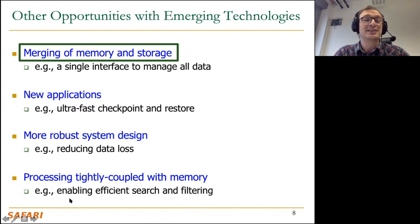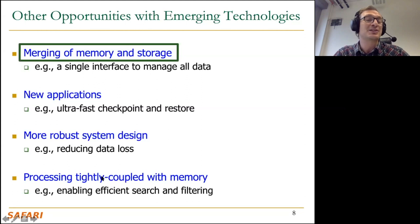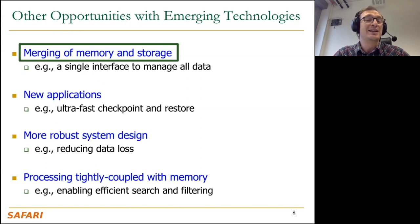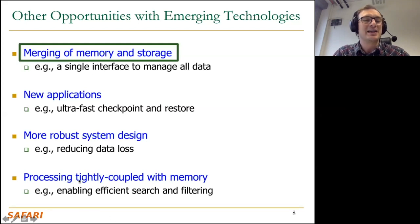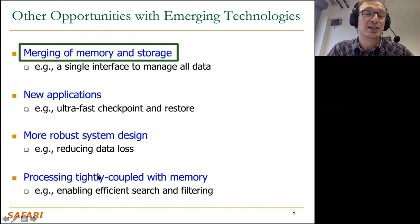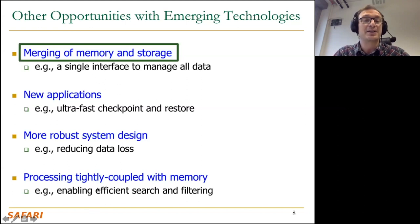Resistive memory technologies enable various types of processing tightly coupled with memory — processing using memory, or computation in memory. They enable ambit-like approaches just like we did with DRAM with ambit and row clone. They enable even more row activations concurrently, leading to other functions. Also, the crossbar structure in resistive memory technologies enables matrix-vector multiplication using Kirchhoff's laws, which has fascinated many people recently. People are using these memories to accelerate machine learning workloads that heavily rely on matrix-vector multiplication and convolutions.